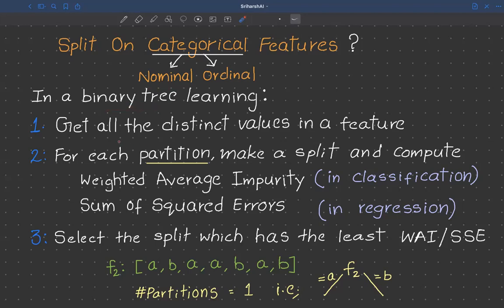The first step is to get all the distinct values in a categorical feature. The second step is that for each partition we make a split and compute the weighted average impurity in the case of classification, or the sum of squared errors in the case of regression. The key difference from continuous features is that here we consider partitions rather than individual values. The third step is to select the split with the least weighted average impurity or sum of squared errors.